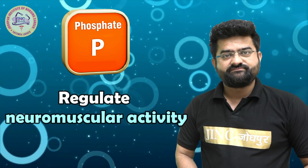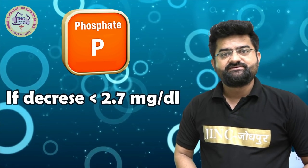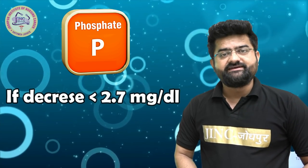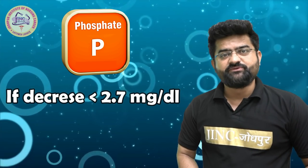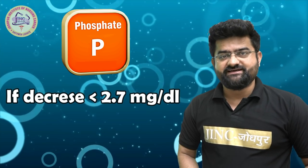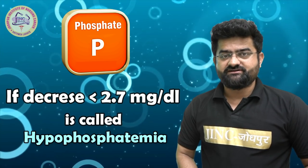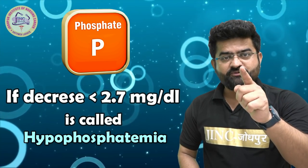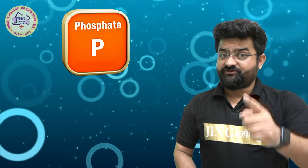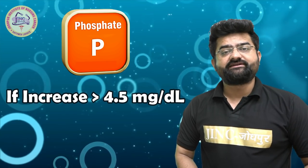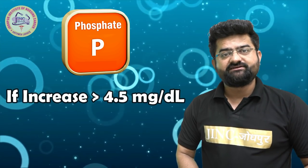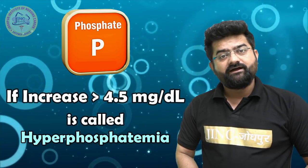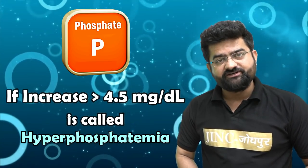If phosphate decreases to less than 2.7 mg per dL, it is called hypophosphatemia. If it increases to more than 4.5 mg per dL, it is called hyperphosphatemia.